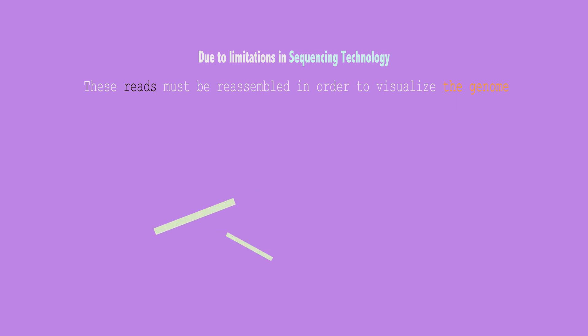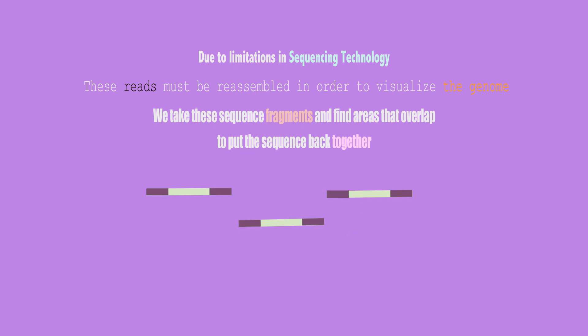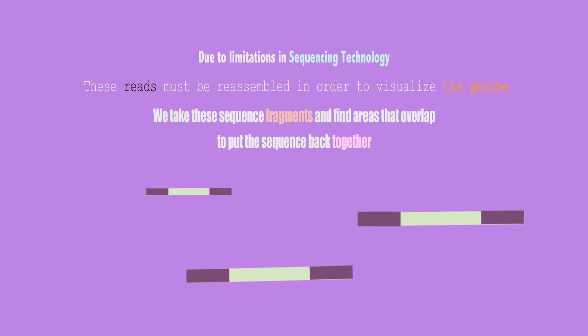These lines represent sequence fragments or reads. We take these sequence fragments and find areas that overlap to put the sequence back together. The highlighted regions represent overlaps. Here we can see that the sequence of nucleotides at one end of the first fragment matches the sequence at one end of the second fragment. This is an overlap.